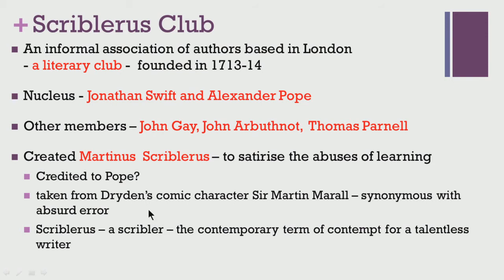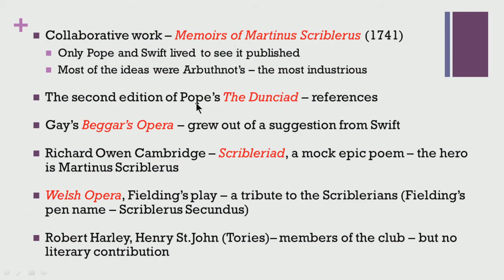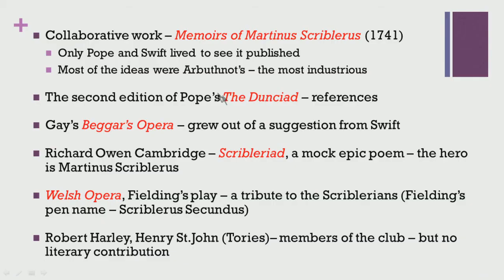This term was taken from two different sources. Firstly, it was based on Dryden's comic character Martin Marpral, synonymous with absurd error. Scriblerus was an extension of the word 'scribbler,' a contemporary term of contempt for a talentless writer. The five of them together produced the collaborative work Memoirs of Martinus Scriblerus, published only much later in 1741. Only Pope and Swift lived to see it published, and the Scriblerus Club dissolved after the death of all five members. The character Martinus Scriblerus is also the central hero of Pope's Dunciad, making this a very significant contribution to Pope's work.